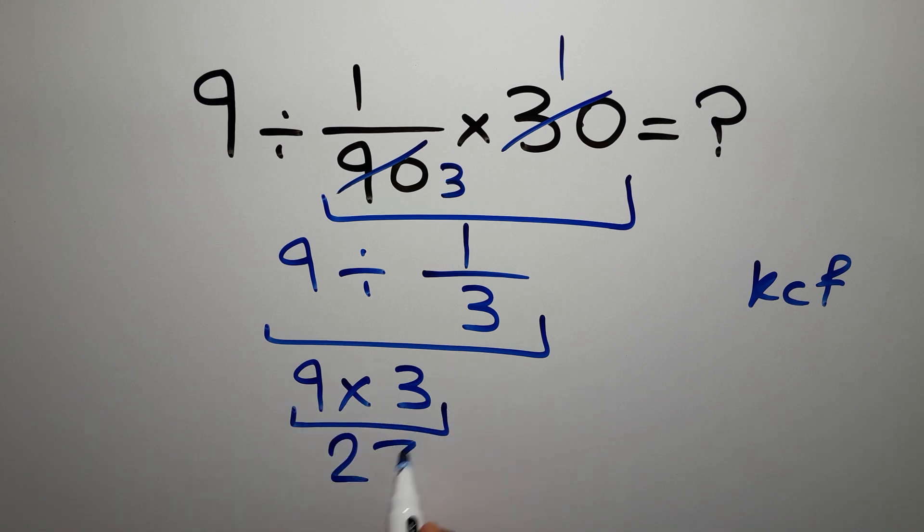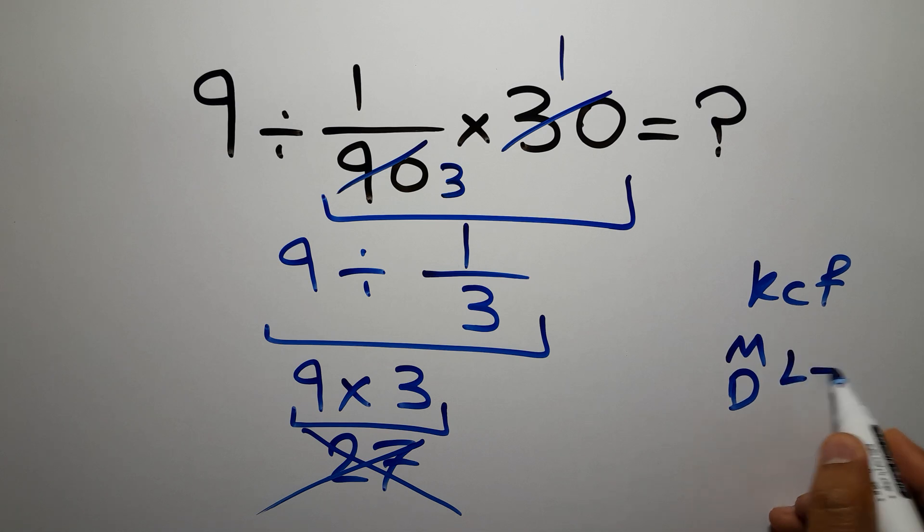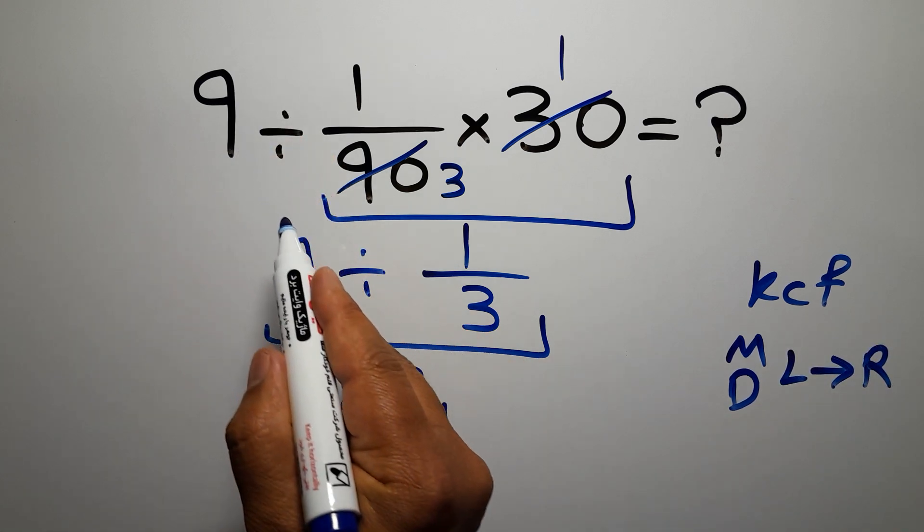Equals 27. But this answer is not correct because according to the order of operations, multiplication and division have equal priority and we have to work from left to right. So first we have to do this division, not this...